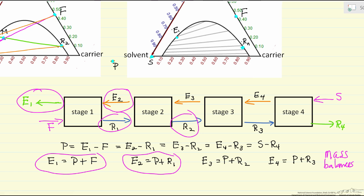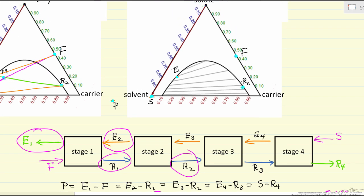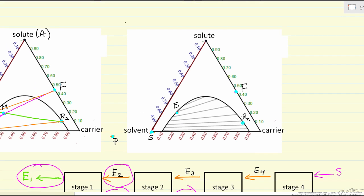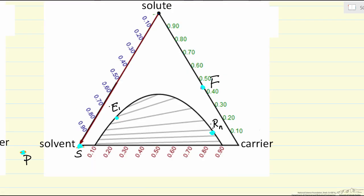Let's go back now and look at this ternary diagram and say what happens. E1 leaving stage one is in equilibrium with r1. I'm going to look at this diagram, and r1 must be in equilibrium with E1, which means on a tie line. So this point then corresponds to r1.